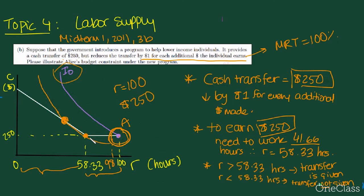She gets $250 indefinitely, and then she gets a downward sloped budget constraint because the government reduces the transfer by $1 for every additional dollar she makes. So if her leisure is less than 58.33 hours, her income is the budget constraint we derived in the last question. And if her leisure is greater than 58.33 hours, her income is exactly $250.